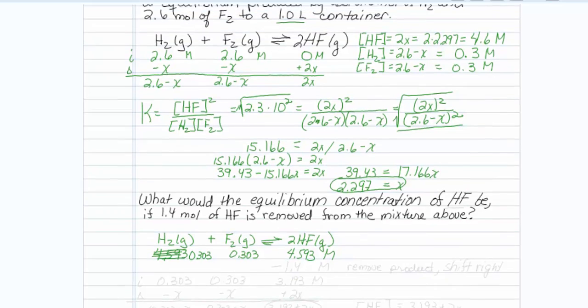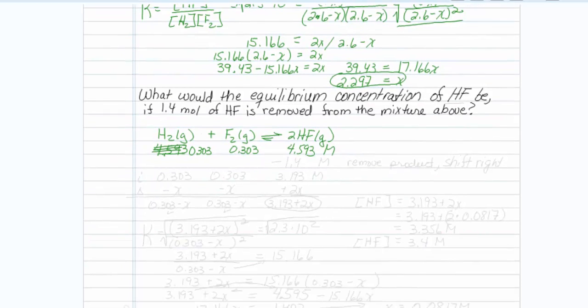Now I'm going to perturb the equilibrium. I'm going to perturb it by removing 1.4 moles, which in our 1 liter flask is 1.4 molar. Now when I remove product, I am going to make this reaction shift to the right. And so here are my new concentrations, my new initial row, and 4.593 minus 1.4 is going to give me 3.193 molar.